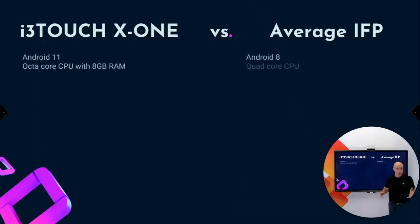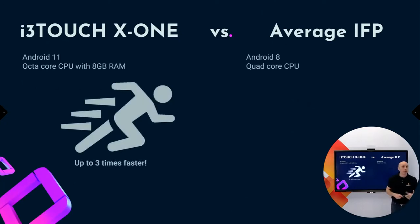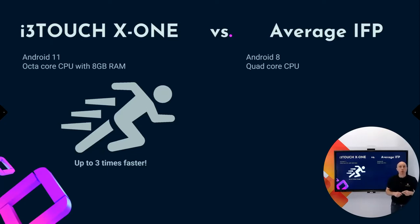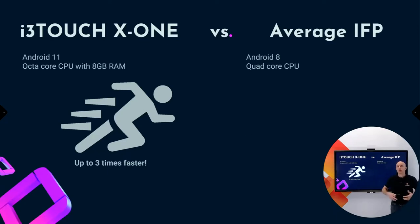So let's start first with Android 11. If you look at the regular or average product in the market, they're still on Android 8, where we come with Android 11 and, much more important, an octa-core CPU with eight gigabytes of RAM, which will allow you to do all your work up to three times faster. Open applications, websites, videos — whatever — this will run as fast as lightning.